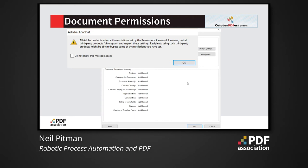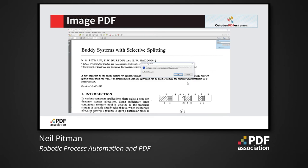A common example of something in the PDF construction that can cause problems is restrictive document permissions. These are usually intended to ensure that content cannot be copied and extracted, which creates issues. All Adobe products enforce the restrictions set by the permissions password; however, not all third-party products do. So settings around content copying and extraction may not necessarily be applied in all cases. Another common issue is image PDFs — these don't contain any text and an optical character recognition process needs to be run in order to extract the text, which introduces the possibility of OCR errors and incorrect data.